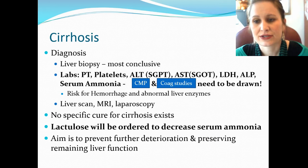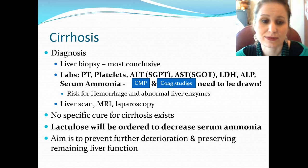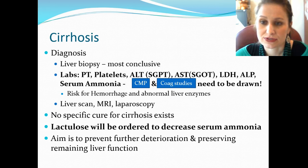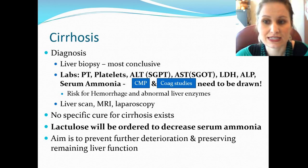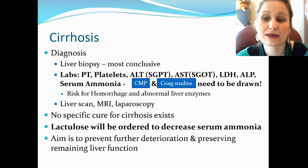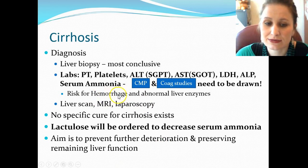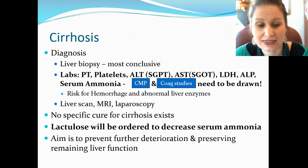Diagnosis is typically a liver biopsy — the most conclusive test. However, these patients are at very high risk for bleeding, so before biopsy we may give a vitamin K injection and transfuse platelets. Labs to check include PT, ALT, AST, liver function tests, LDH, ALP, serum ammonia levels, CMP, and coagulation studies — all must be drawn beforehand. Patients are at risk for hemorrhage. We can also do a liver scan, MRI, CT scan, or laparoscopy.